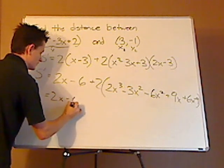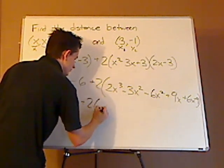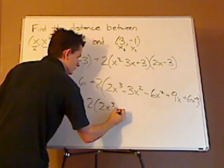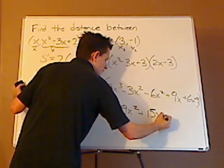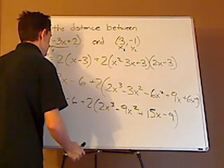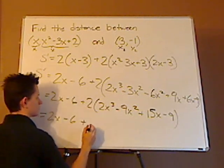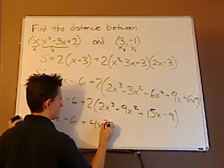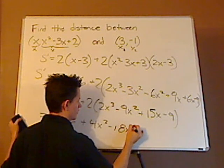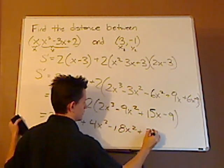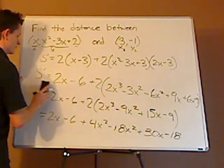So this is 2x minus 6 plus... let me do this first inside, so it's 2 parentheses 2x cubed minus 9x squared plus 15x minus 9. Distribute the 2, so you have 2x minus 6 plus 4x cubed minus 18x squared plus 30x minus 18. You simplify that further.